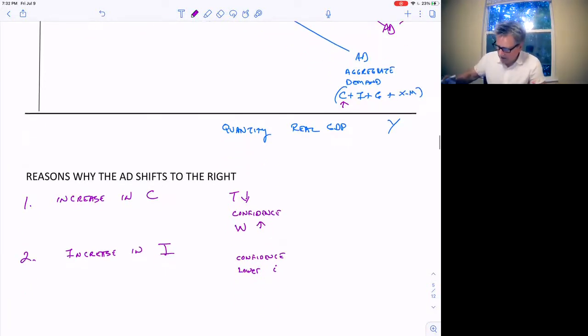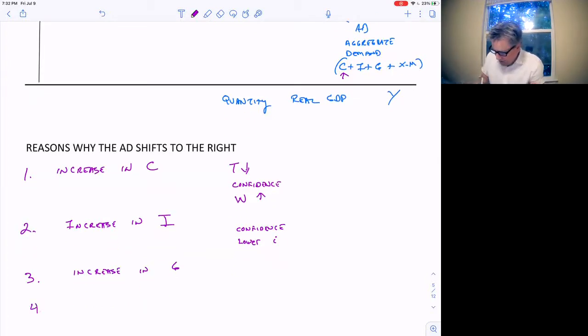What else would make aggregate demand shift to the right? How about an increase in G? And one more. What is it? An increase in net exports. So an increase in exports minus imports. Any of those four categories that Keynes came up with as part of aggregate demand. Any of those go up, aggregate demand will shift to the right.